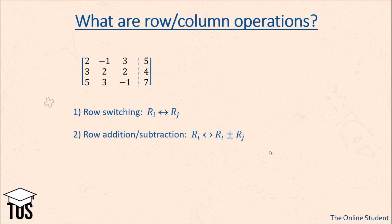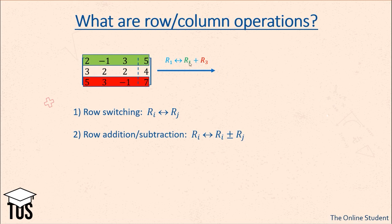Secondly, we have row addition or subtraction — we want a row to become itself plus or minus another row. For example, we indicate that we want the first row to become the first row plus the third row. So the first element will be 2 plus 5, which equals 7, and minus 1 plus 3, which equals 2, and so on.